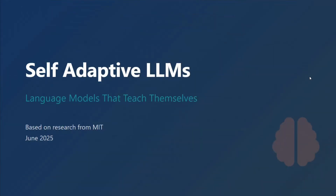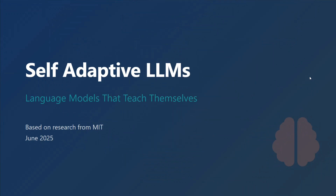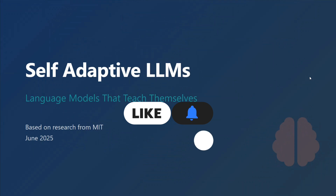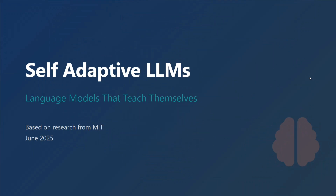There is a new research paper by MIT on self-adaptive language models, which explains how LLMs using their technique called the SEAL framework can now fine-tune themselves. They can generate their own fine-tuning dataset, the parameters to use, and can test out strategies to fine-tune themselves — so no human in the loop. This is a breakthrough paper which could eventually lead to the elimination of cumbersome techniques like fine-tuning.